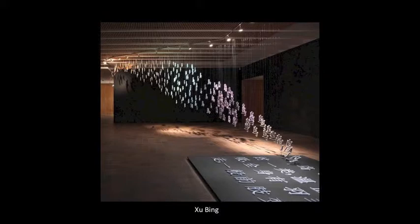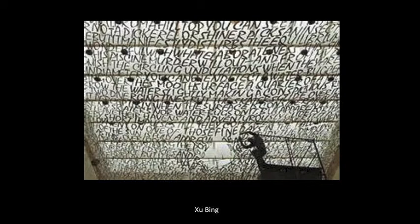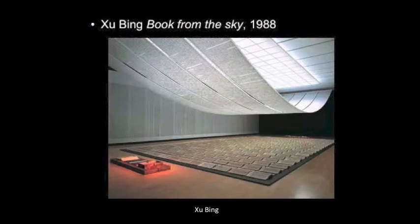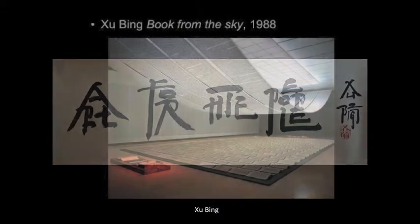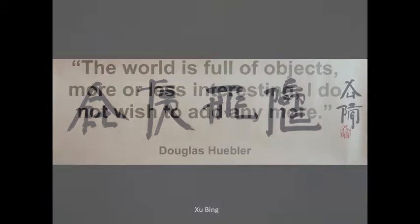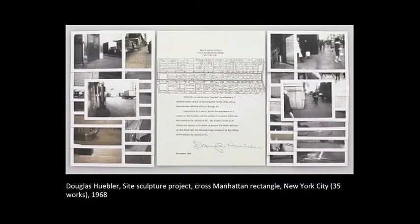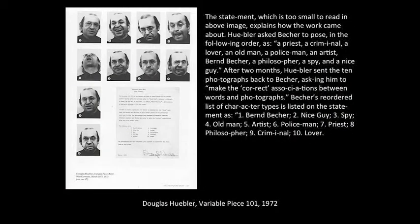Xu Bing explores issues of language and communication in the pictographic nature of Chinese characters. He created his own Chinese-like characters which have no meaning. In his Book from the Sky project, he printed them as if they were an actual Chinese text. This juxtaposition makes us question our assumptions about meaning and communication, just like the work of his Western counterparts. Douglas Huebler turned from making objects to documenting various actions that involve social environments and the passing of time. The text explains the project, which almost renders the image redundant.